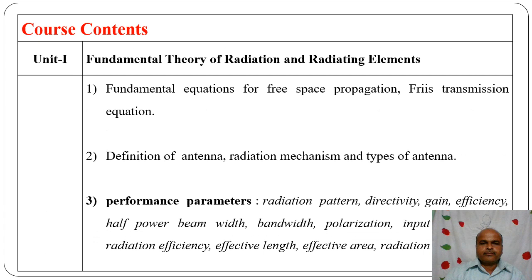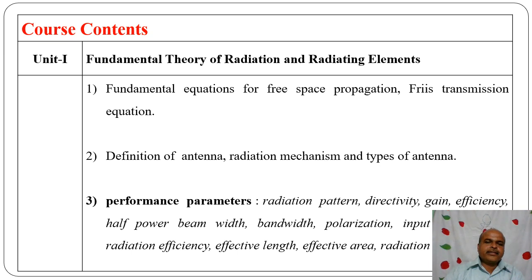Unit one covers fundamental theory of radiation and radiating elements. First, we derive the fundamental equation for free space propagation, also called the free space transmission equation, and solve problems on it. Second, definition of antenna, radiation mechanism, and types of antenna — antenna is a transducer which transmits and receives electromagnetic waves. We study how an antenna radiates and receives electromagnetic waves, then different types: aperture antenna, helical antenna, microstrip patch antenna, parabolic reflector antenna, and lens antenna.